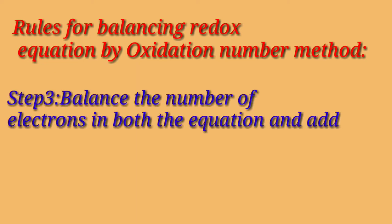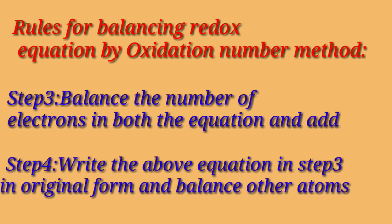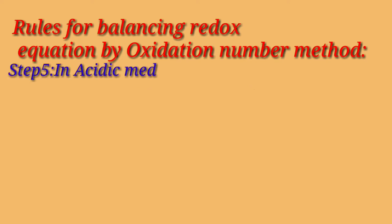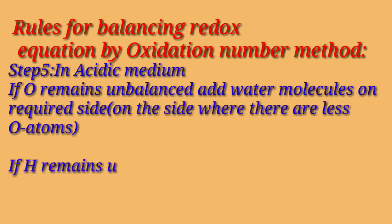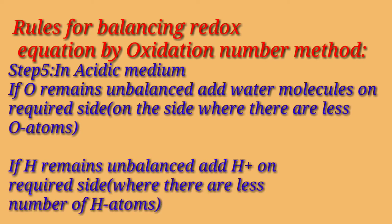Third step: balance the number of electrons in both equations and add. Fourth step: write the above equation from step three in original form and balance other atoms. Fifth step: in case of acidic medium, if oxygen remains unbalanced, add water molecules on the required side; if hydrogen remains unbalanced, add H⁺ on the required side.